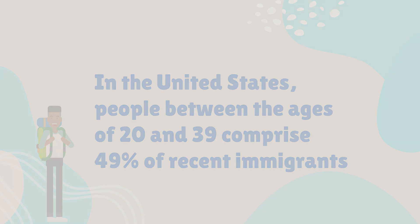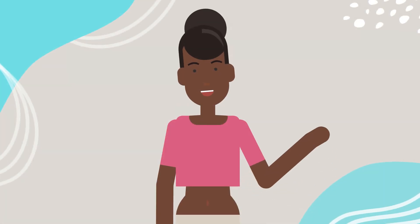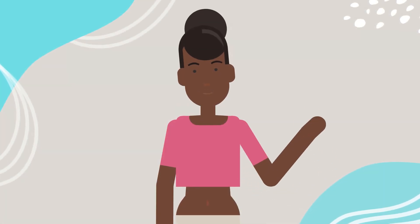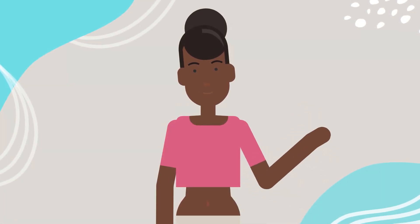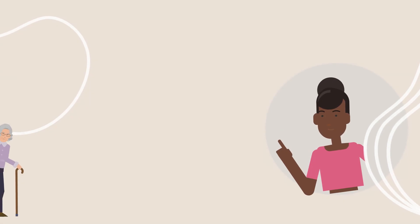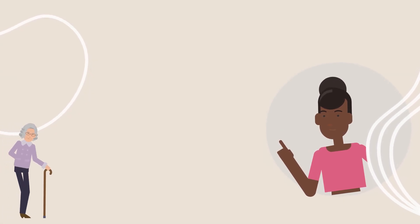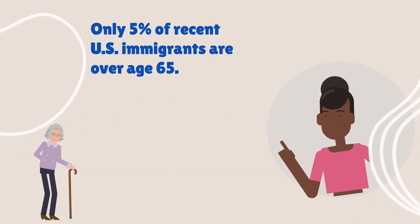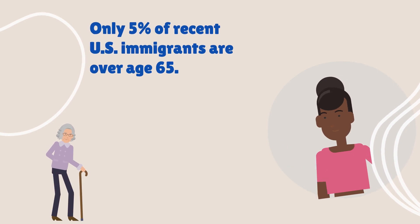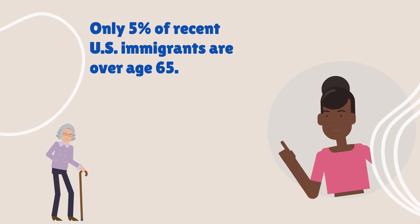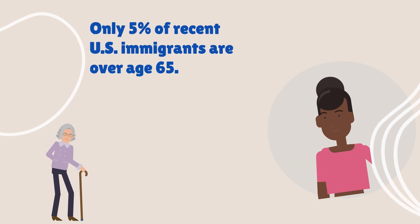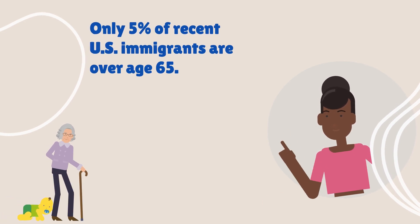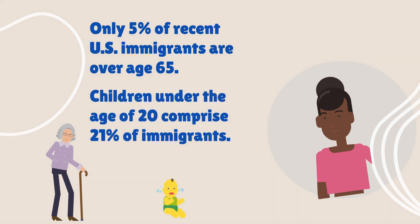A high share of U.S. immigrants are young adults, as Ravenstein expected. Immigrants are less likely to be elderly people or children — only five percent of recent U.S. immigrants are over age 65, and children under the age of 20 comprise only 21 percent of immigrants.